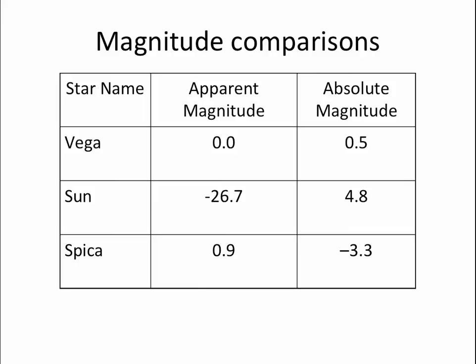The star Spica is up in the spring sky. It's a relatively bright star with an apparent magnitude of 0.9, which means it appears fainter than Vega in our sky. But if we were to move Spica to a distance of 10 parsecs, it would be extraordinarily bright — it would have an absolute magnitude of minus 3.3. So the absolute magnitude of Spica is brighter than both the Sun and Vega, which means Spica is intrinsically a brighter star, putting out more energy than the other two, even though in our sky Spica is the faintest of the three.